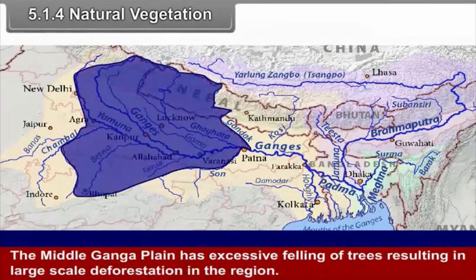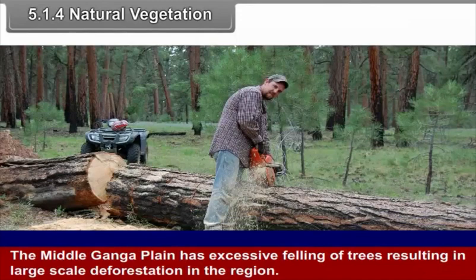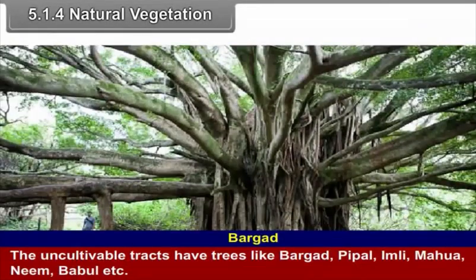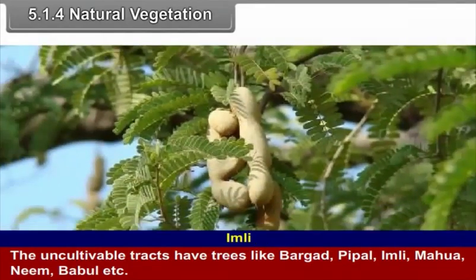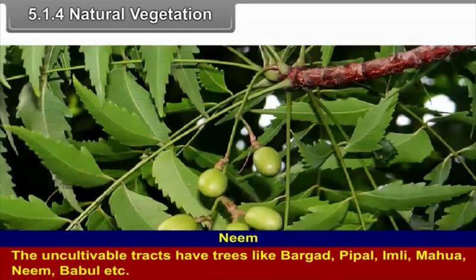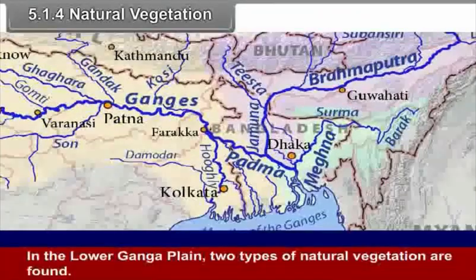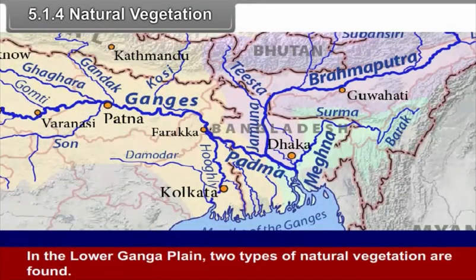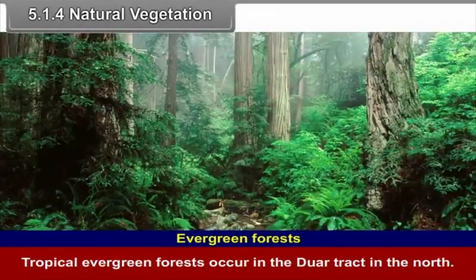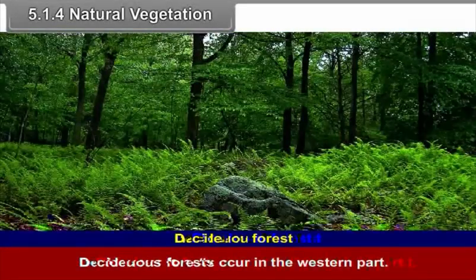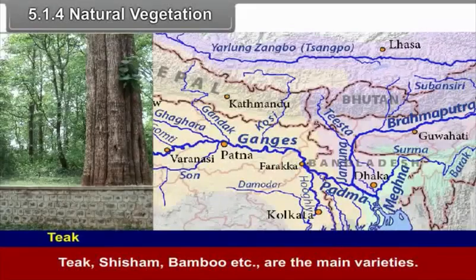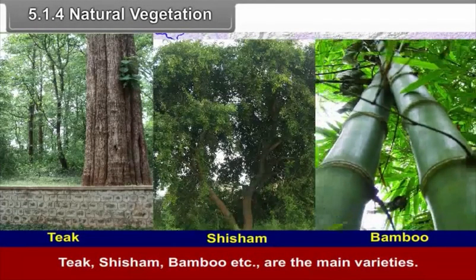The middle Ganga plain has seen excessive felling of trees resulting in large-scale deforestation. The uncultivable tracts have trees like Bargad, Pipal, Imli, Mahua, Neem, Babul, etc. In the lower Ganga plain, two types of natural vegetation are found. Tropical evergreen forests occur in the Duar tract in the north; sal and shisham are the dominant varieties. Deciduous forests occur in the western part; teak, shisham and bamboo are the main varieties.